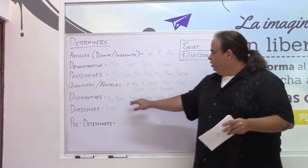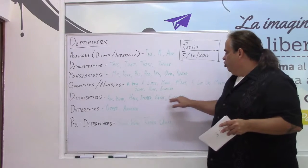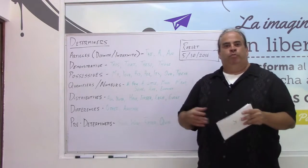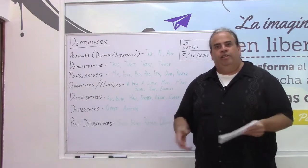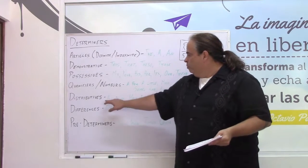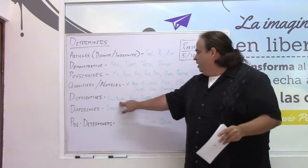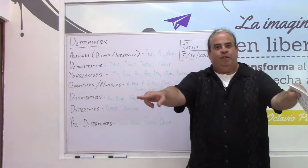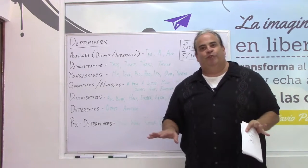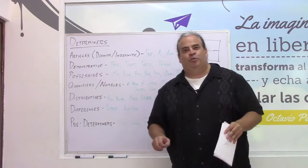Distributives. All, both, half, either, each, every. They also represent the amount of things that you're talking about. For example, both of these people are learning to speak English. Half of these people are speaking English very well. The other half will be joining them soon.